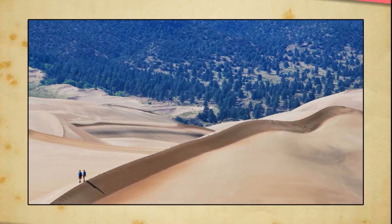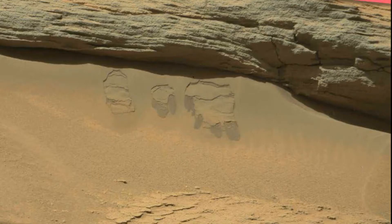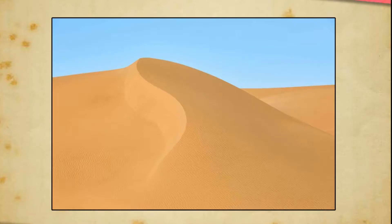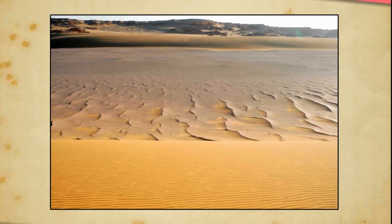Work of Wind. An active agent of erosion and deposition in the deserts is wind. Winds erode the lower section of the rock more than the upper section. Therefore, such rocks have a narrow base and wider top. Wind lifts and transports sand from one place to another. When it stops blowing, the sand falls and gets deposited in low hill-like structures called sand dunes. When the grains of sand are very fine, the wind can carry it over very large distances. When such sand is deposited in large areas, it is called loess.